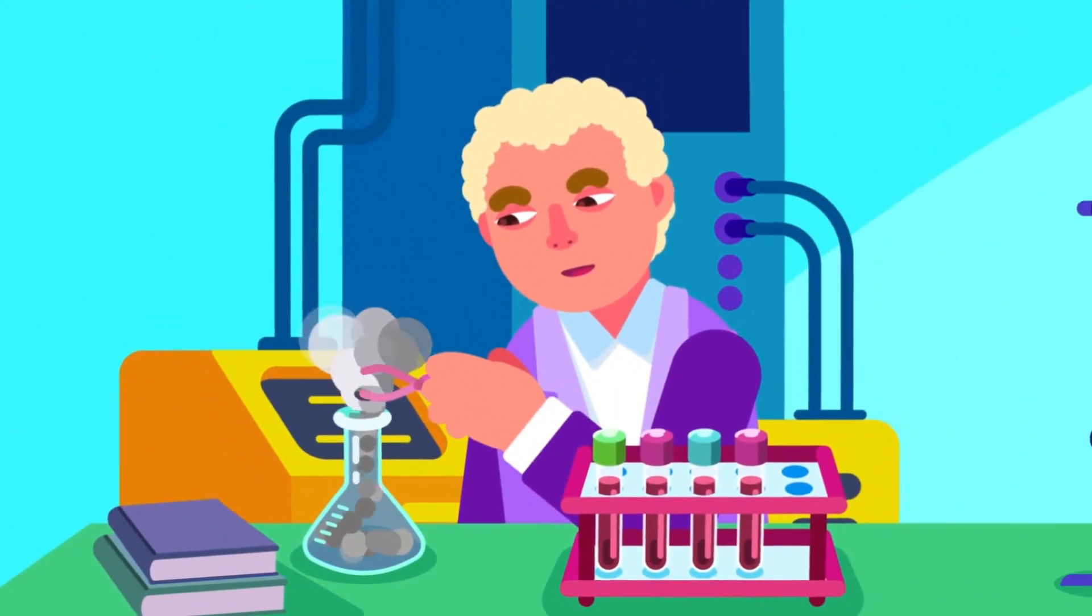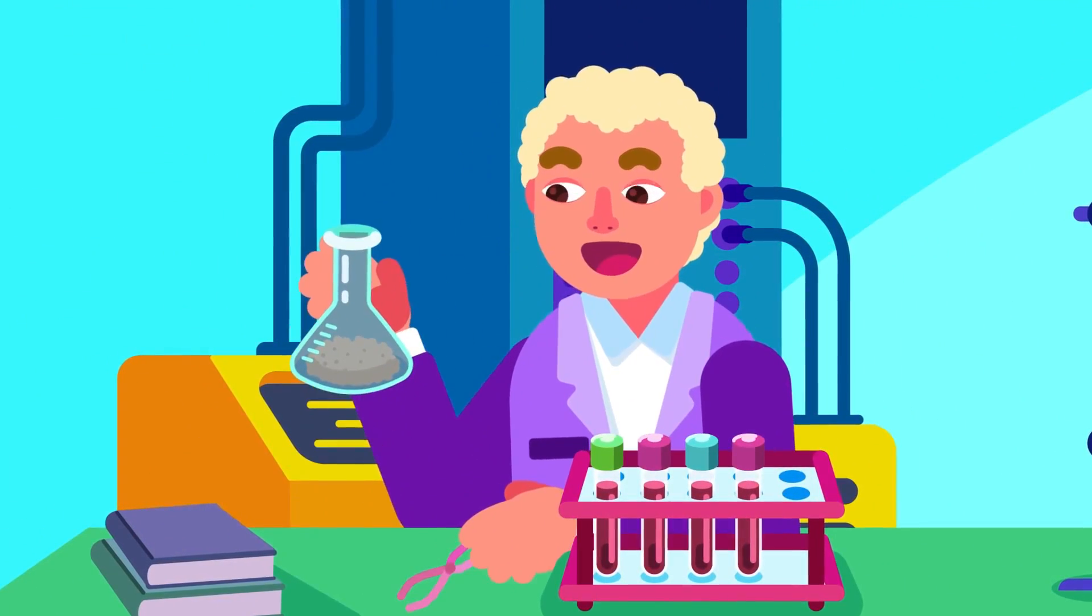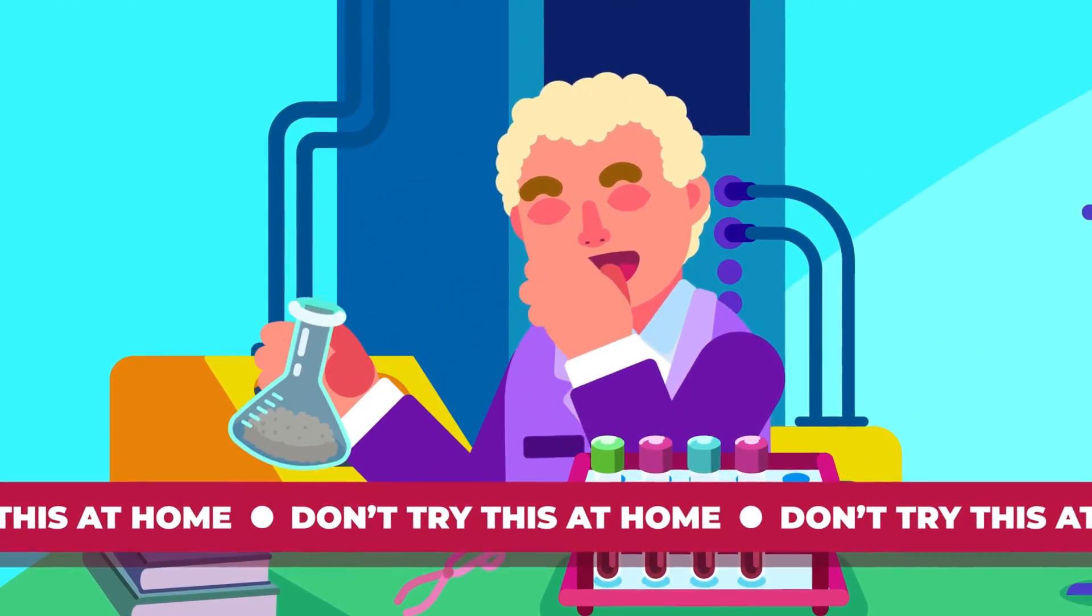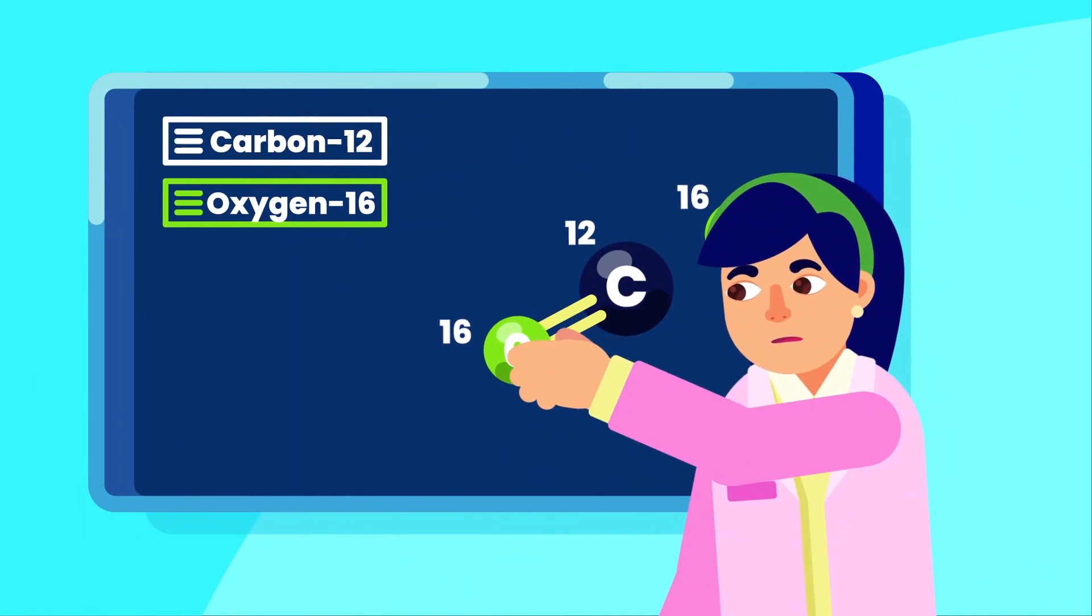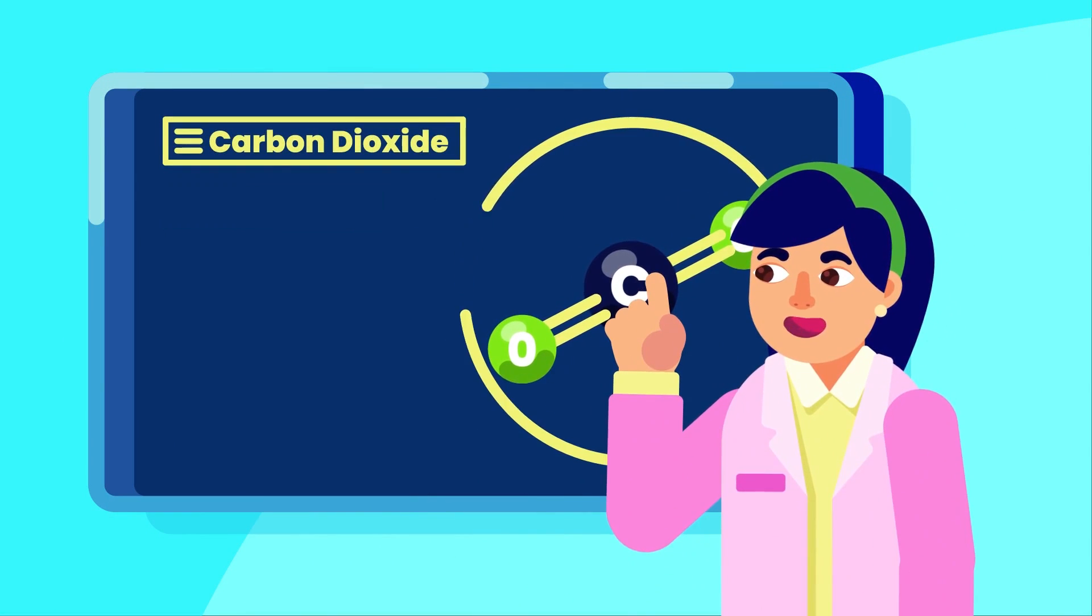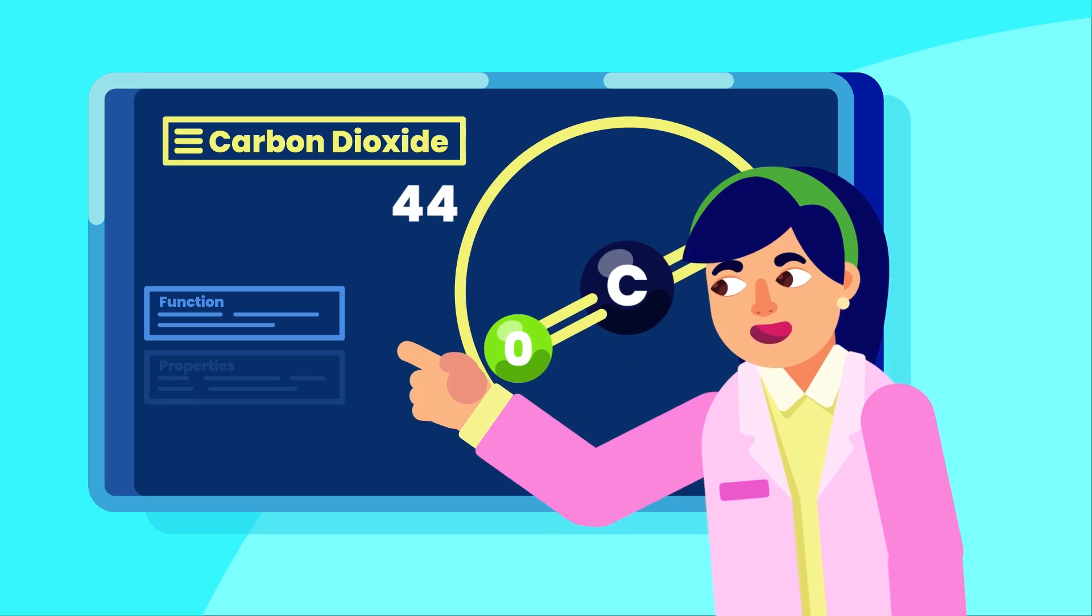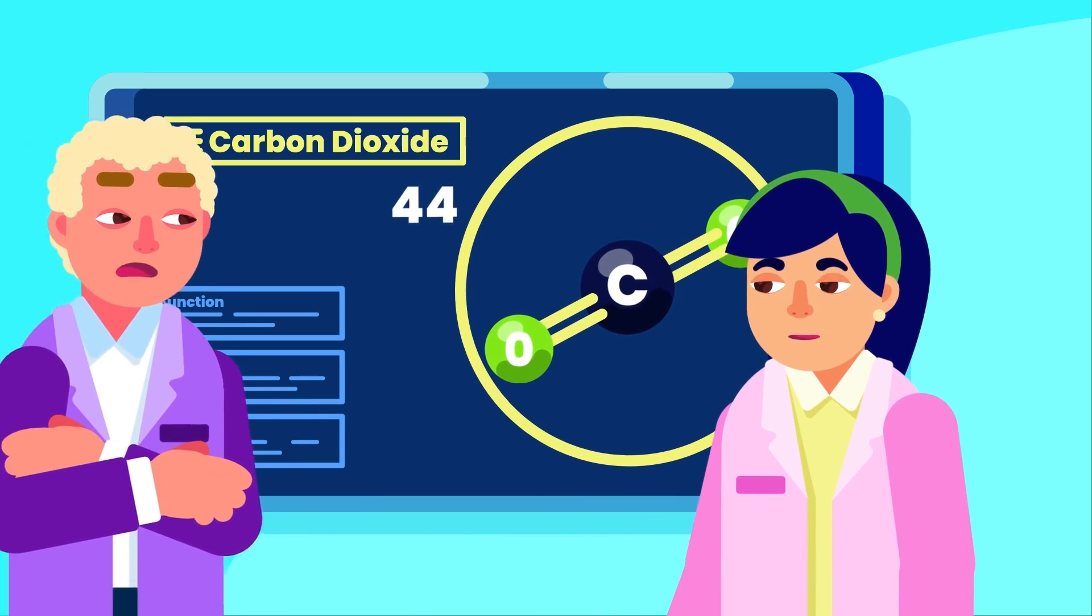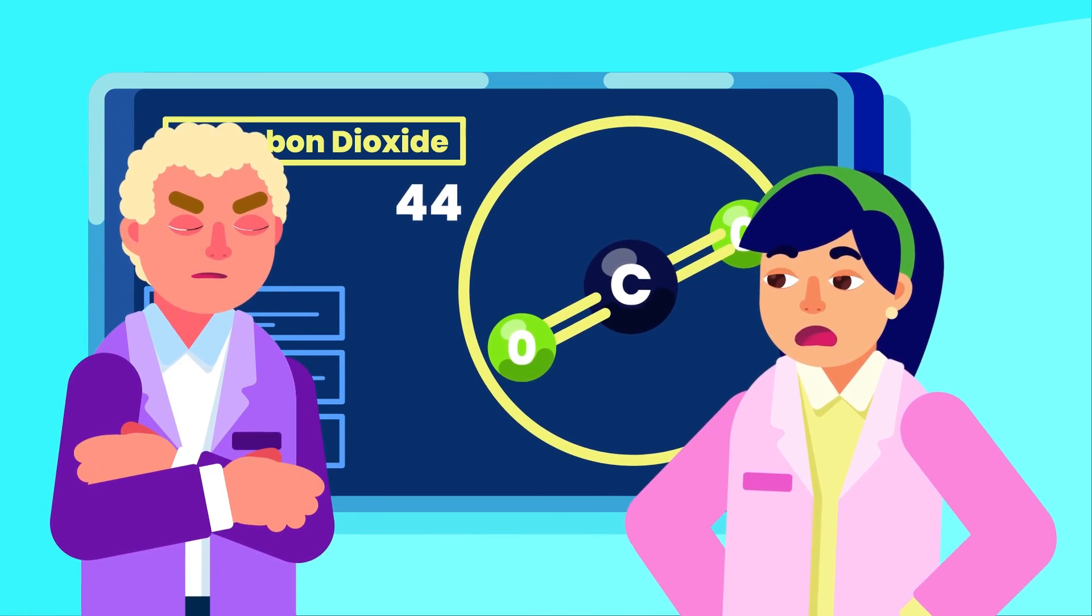When they combine into molecules or compounds, they form molecular properties that are different from the property of its individual elements. One of them is the molecular mass. Mass is important to determine the new molecule's function and behavior. Today, we will discuss relative molecular and formula mass.